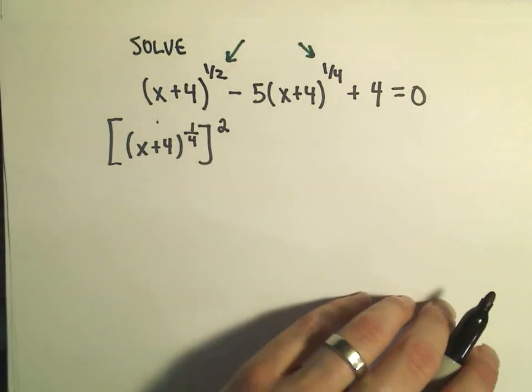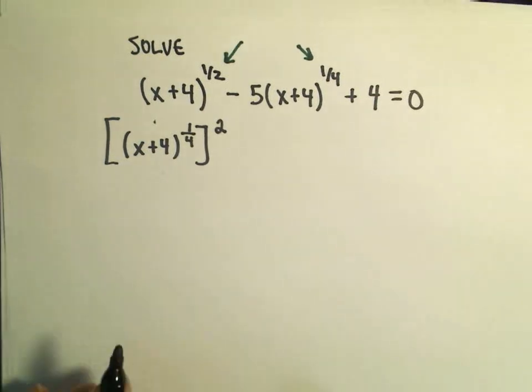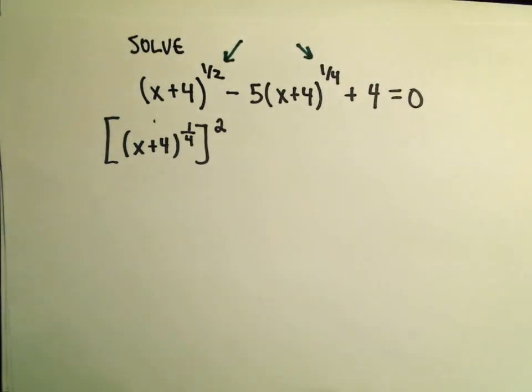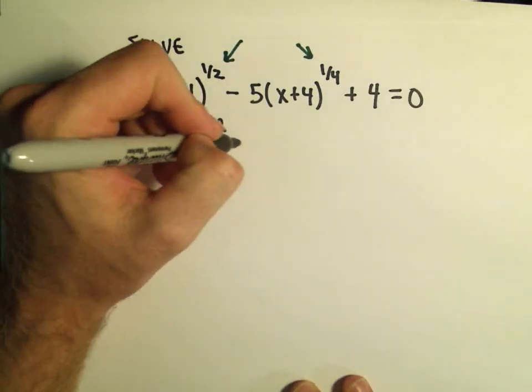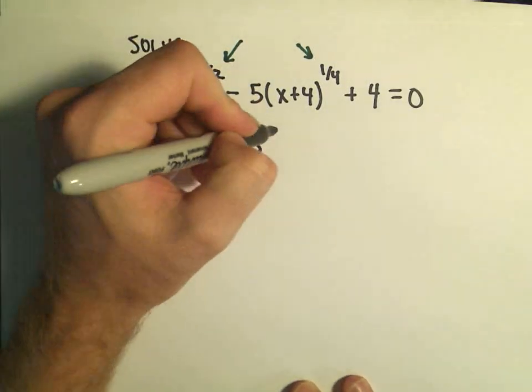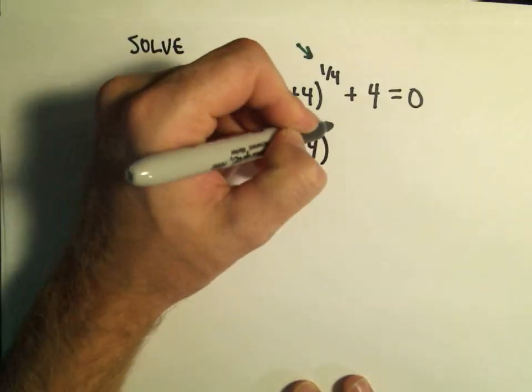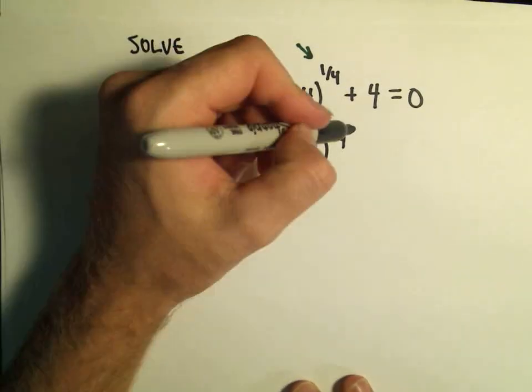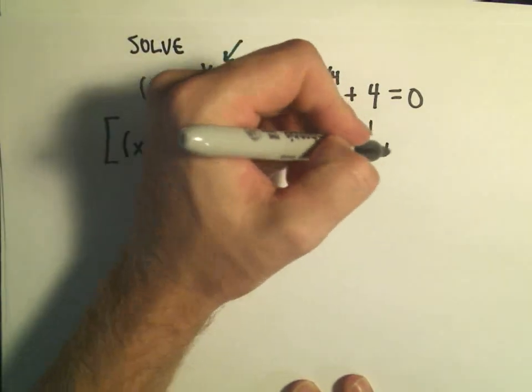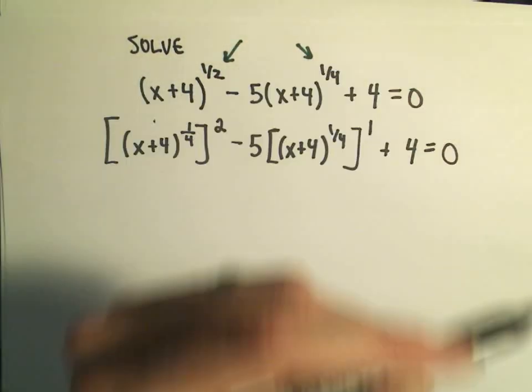So certainly these are tricky problems already. This is something I'm having to stop and think about a little bit, kind of what exponents I need. Then I'm going to have five, and then we have this x plus four to the one-fourth power, and that's being raised to the first, plus four equals zero.